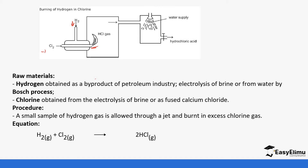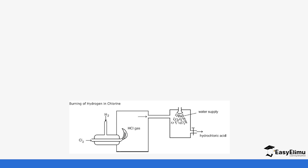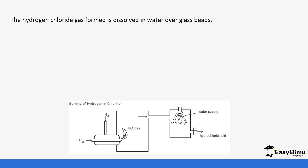Hydrogen reacts with chlorine to form hydrogen chloride gas. The mixture is very explosive, so it is very important to ensure the reaction is carried out under the right conditions. The hydrogen chloride that is formed is then dissolved in water — you can see a stream of water in the setup.